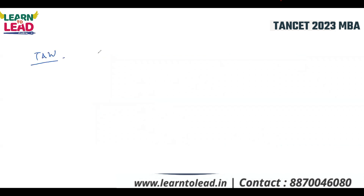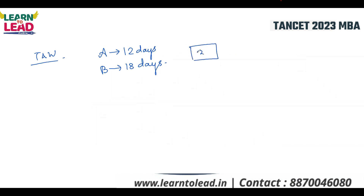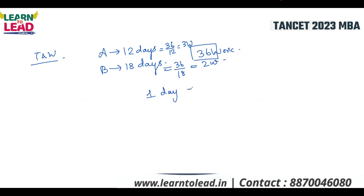Time and Work. Suppose A can do the work in 12 days and B can do the work in 18 days. The LCM of 12 and 18 is 36 units of work. If they both work together in one day they can do 5 units of work. So 36 divided by 5 gives 7 and 1/5 days as the answer.